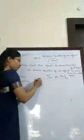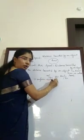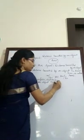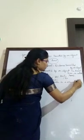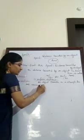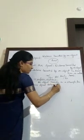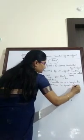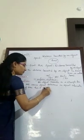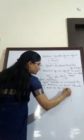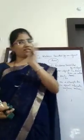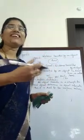Now we discuss another important type of motion: uniform motion. What is the meaning of uniform motion? If an object travels in a straight line and covers equal distances in equal intervals of time, then it is said to be in uniform motion.